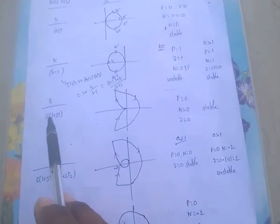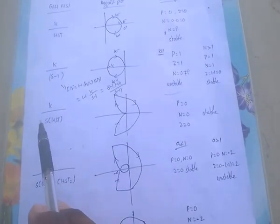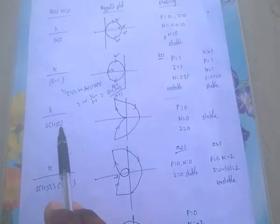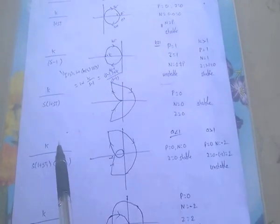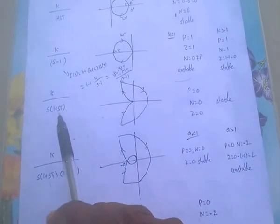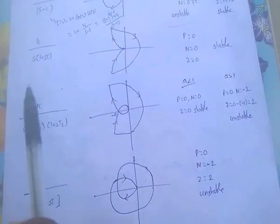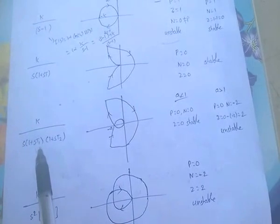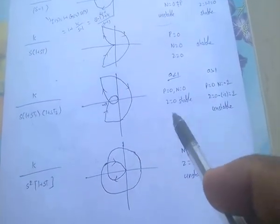For G(S)·H(S) = K / [S(1 + ST)]: both poles are on the left side only, so the number of right-side poles of F(S) is zero, and right-side zeros are also zero. Therefore the system is stable.